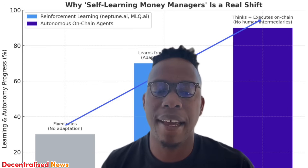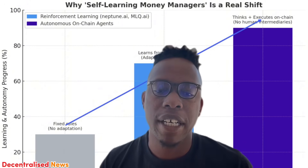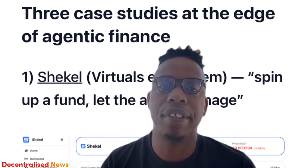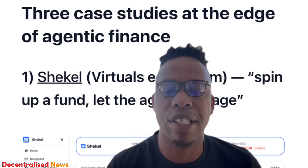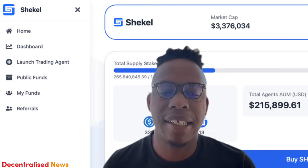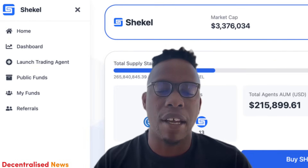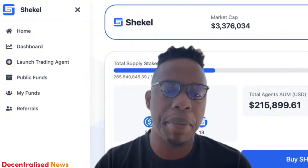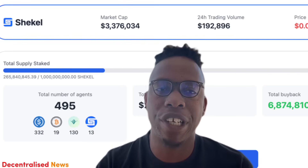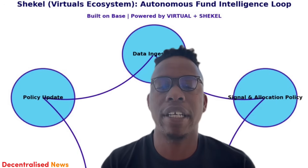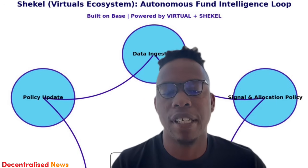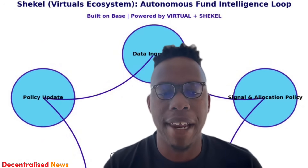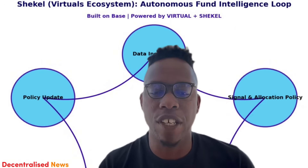The first of three cases we'll look at is Shekel, part of the Virtuals ecosystem — a spin-up fund where you can let the agent manage it. Virtuals Protocol is a Base-native platform for launching and co-owning AI agents. Shekel's product is a permissionless fund that can be fully human-run or AI-managed, with staking that shares profits and fees from every fund under that brand's umbrella.